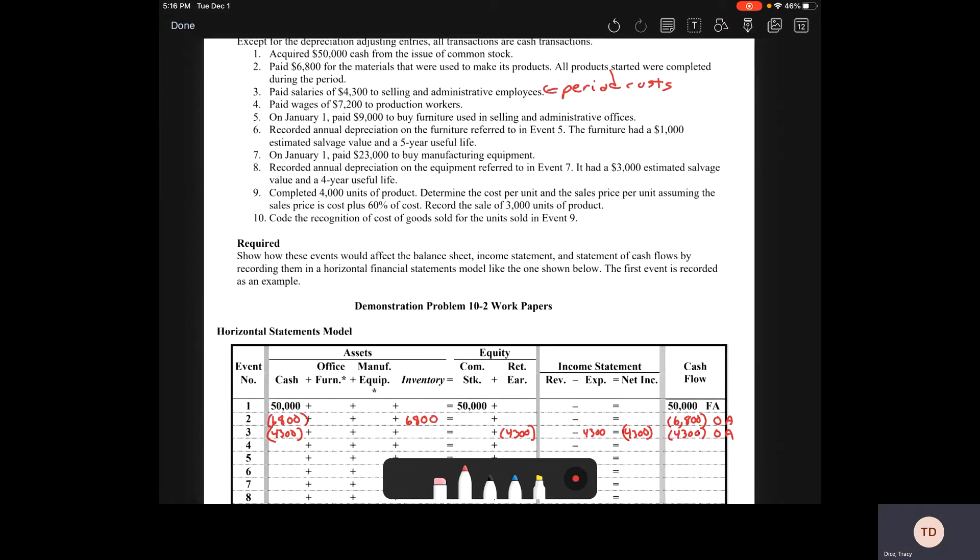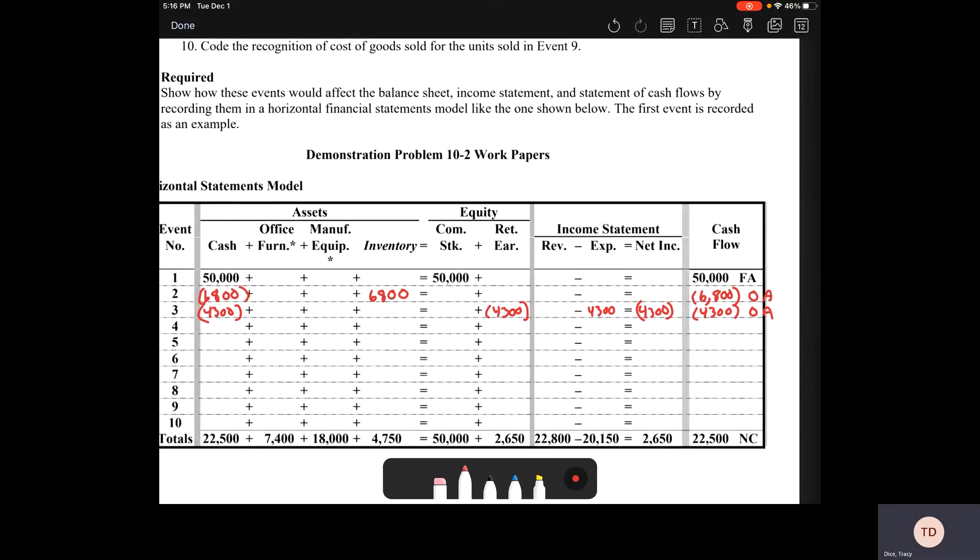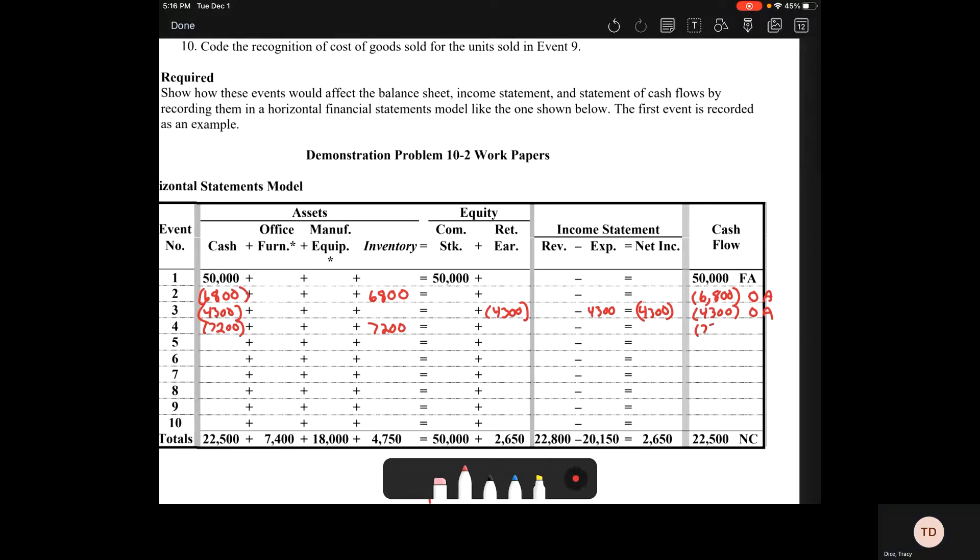Number four, we paid wages of $7,200 to production workers. These are production workers, so this is our direct labor, which means it's part of the product cost. This will be expensed later in our cost of goods sold. We've got $7,200 out of cash. Since it's going to be in our cost of goods sold later, we add it into our inventory. Then it's going to come out of our cash flow. $7,200, not $720. It's an operating activity.